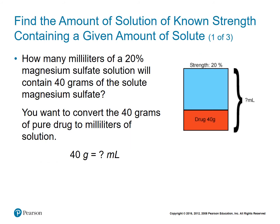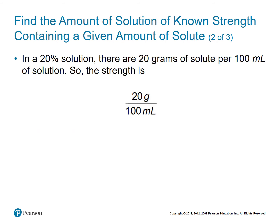In this example, we want to know how many milliliters of a 20% magnesium sulfate solution will contain 40 grams of solute magnesium sulfate. The question is asking for the amount of solution. We know the strength — 20% — and the amount of solute — 40 grams — so we're solving for solution. In a 20% solution, we know that 20 grams of solute is for every 100 milliliters of solution.